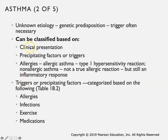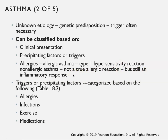In terms of classifying asthma, you can classify it based on clinical presentation or based on the triggers or precipitating factors that induce symptoms. One of the main types is allergic asthma - you can categorize asthma as either allergic or non-allergic. Allergic asthma is a type 1 hypersensitivity reaction. In non-allergic asthma, it's not a true allergic reaction but it still involves an inflammatory response. Triggers are categorized as allergens, infections, exercise, and medications.